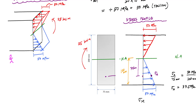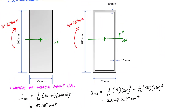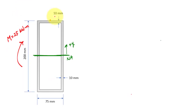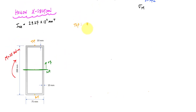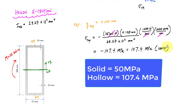That's the solid cross section. Let's look at the hollow cross section — the process is identical; it doesn't matter what the cross section is. The only difference is that the moment of inertia is smaller, so from the bending formula we should expect our stress values to go up. For my hollow cross section, we calculate the normal stress due to the bending moment at the top using Y = positive 100 millimeters, and this time we get negative 107.4 megapascals, compared to 50 MPa for the solid. We essentially halved the moment of inertia, so we roughly doubled the stress.